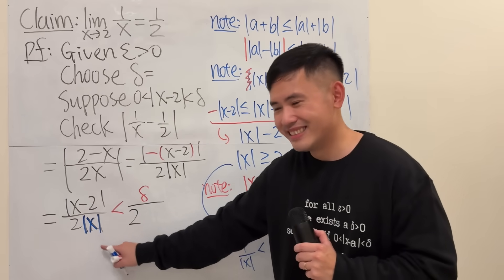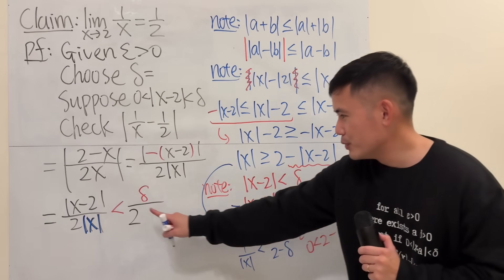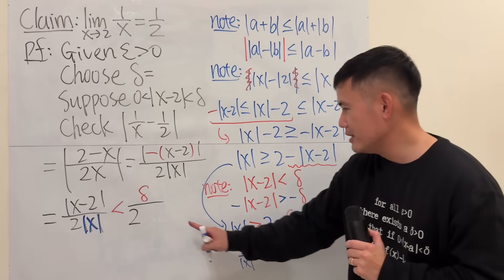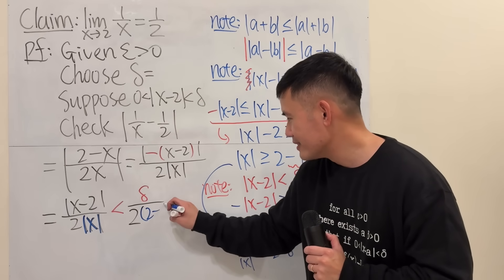The inequality works: we have 1 over absolute value of x on the bottom, and we can now place 1 over (2 minus delta) on the bottom as an upper bound.